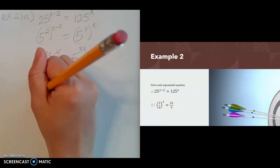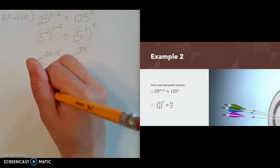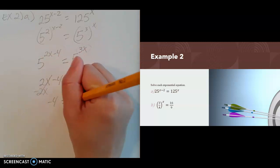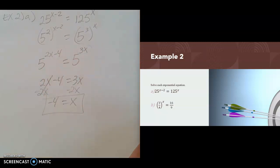And it's not too terrible. I'm just going to subtract 2x from both sides. I'll have negative 4 equals x, and I'm done. x can be negative in case you guys are worried. You can always have negative exponents, and that's perfectly fine.